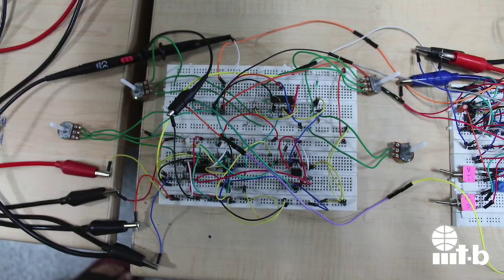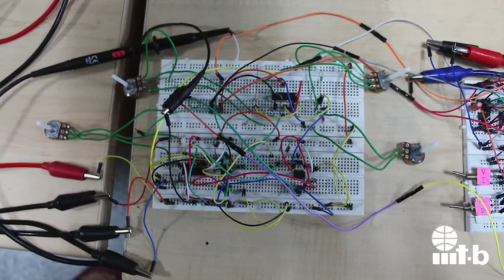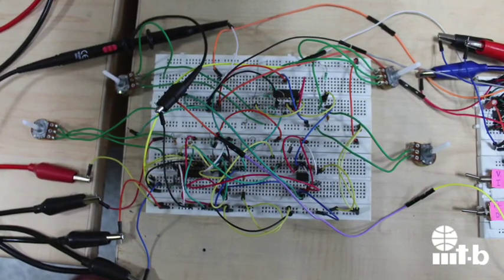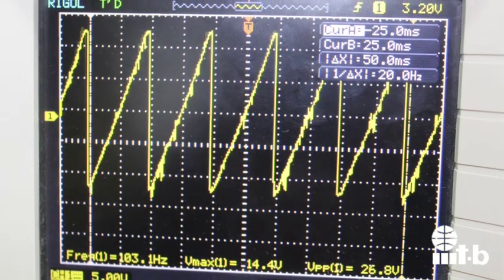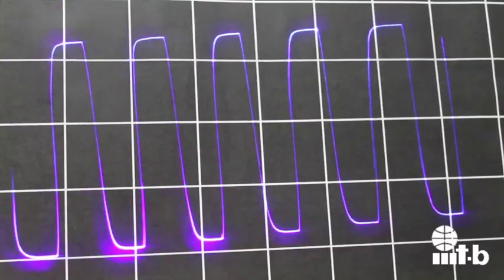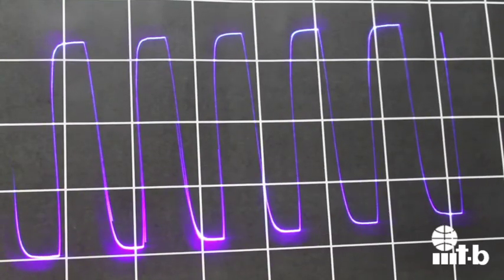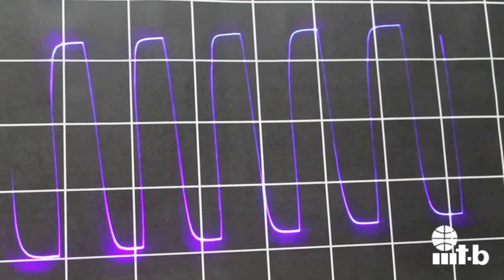The timing circuit is responsible for producing a sawtooth wave of varying width to provide appropriate time scale for the display. The output of the timing circuit is a wave like this. The timing circuit also houses the trigger circuit which helps in stabilizing the signal on the display.